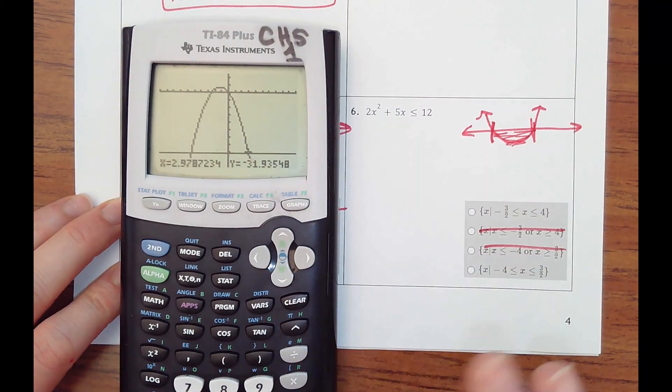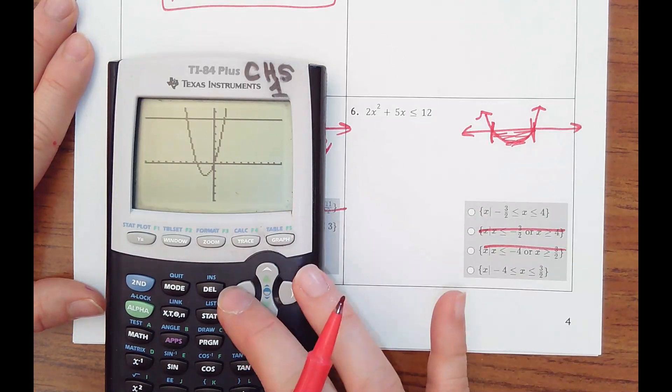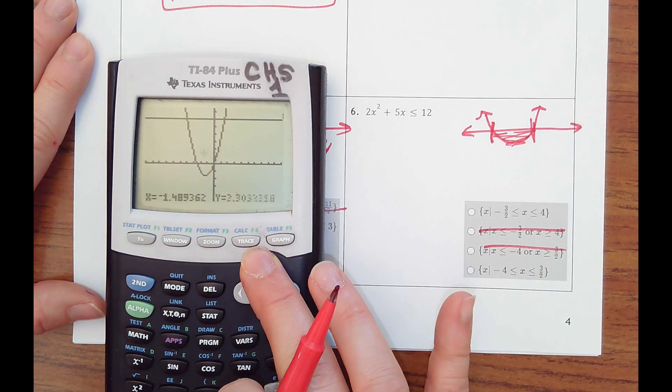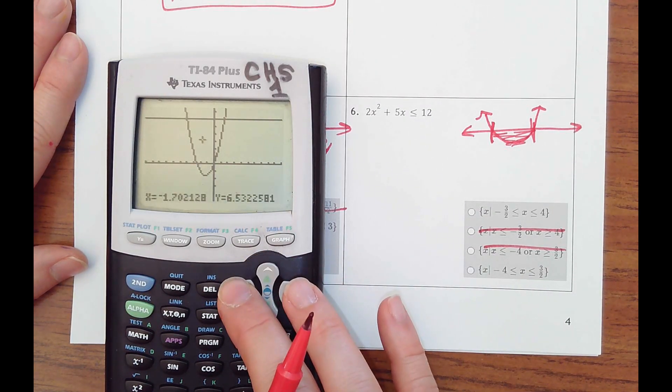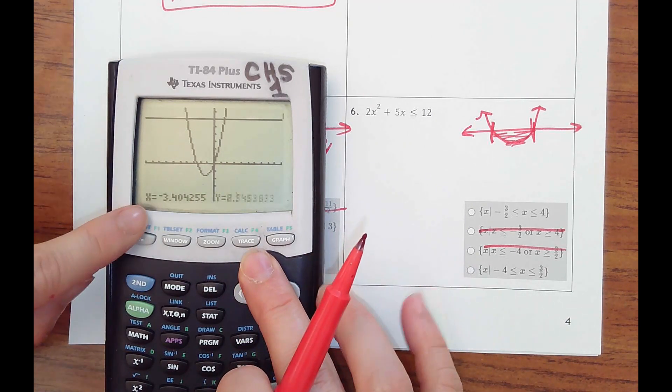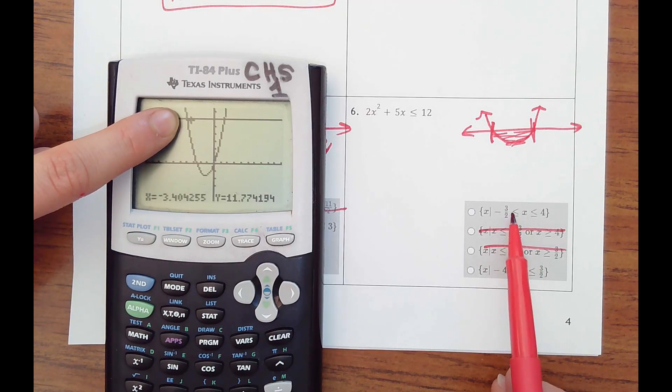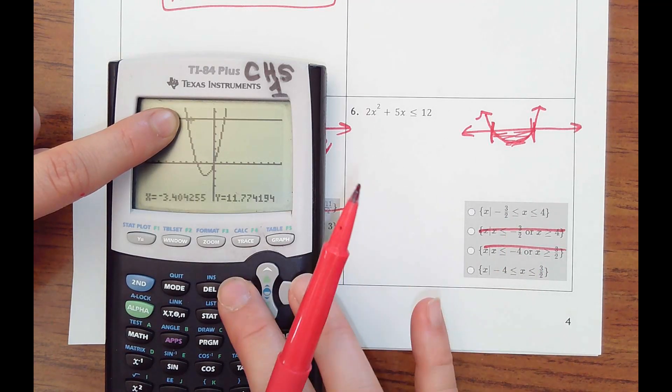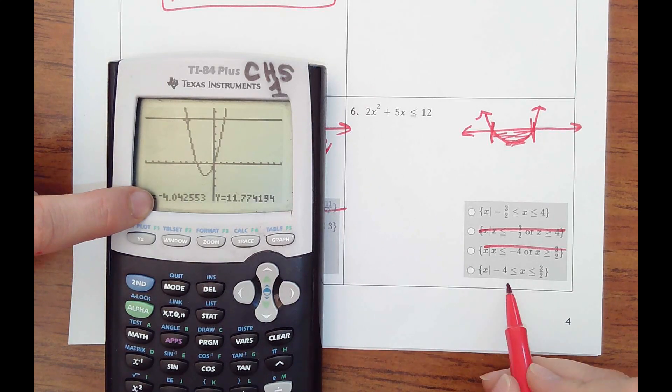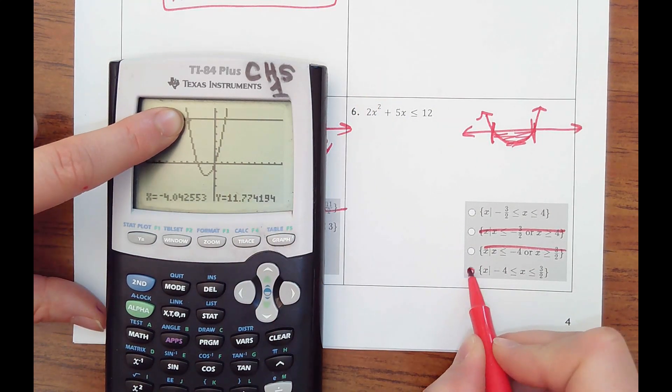You could graph it real quick and just see where you think the points of intersection are. Look like this. And then I could just kind of guess here. I've got to be between, this is already way past negative. This is saying x is greater than what? Negative three halves would be negative 1.5. Look, I'm all the way back here at negative four. So x has got to be between negative four and one and a half. So it'd be that one.